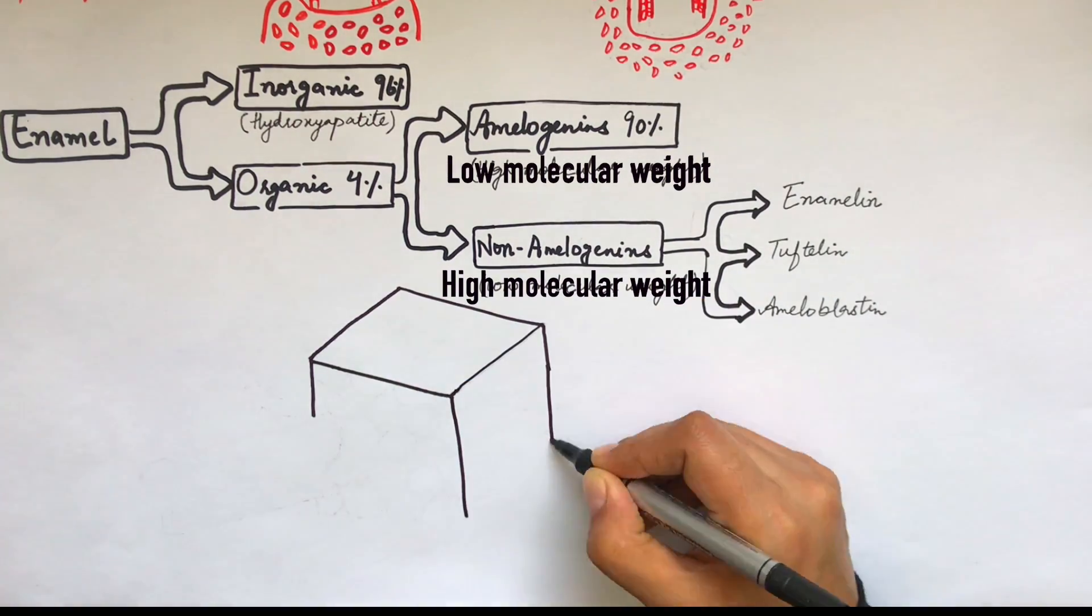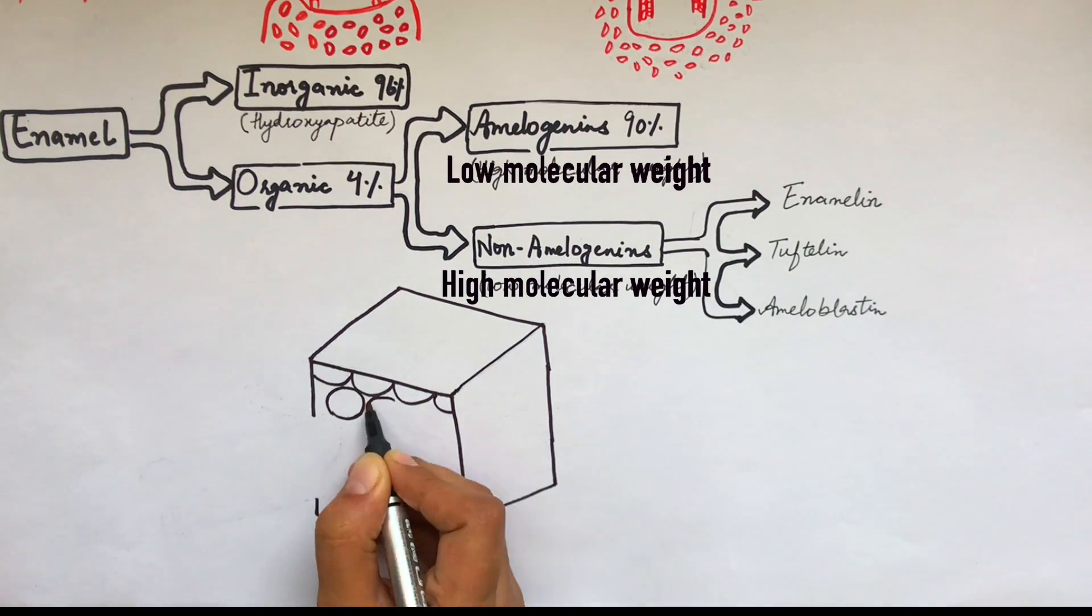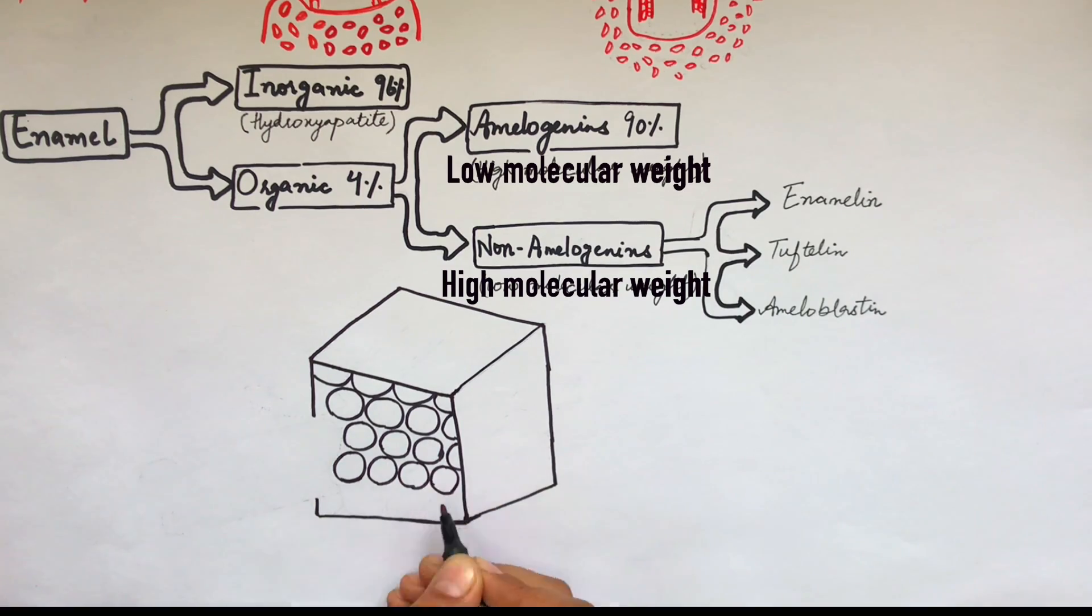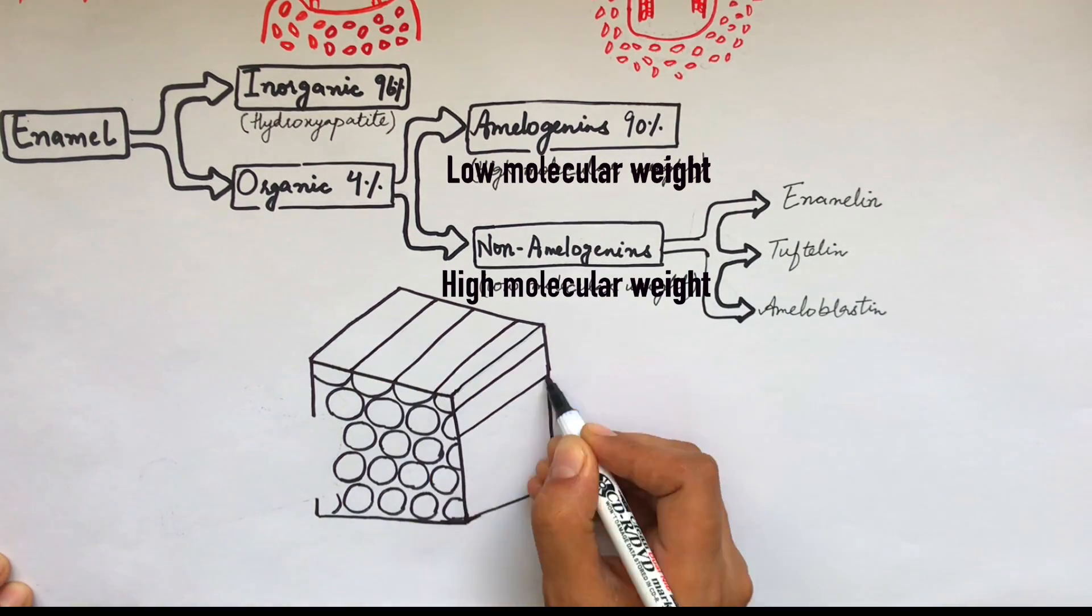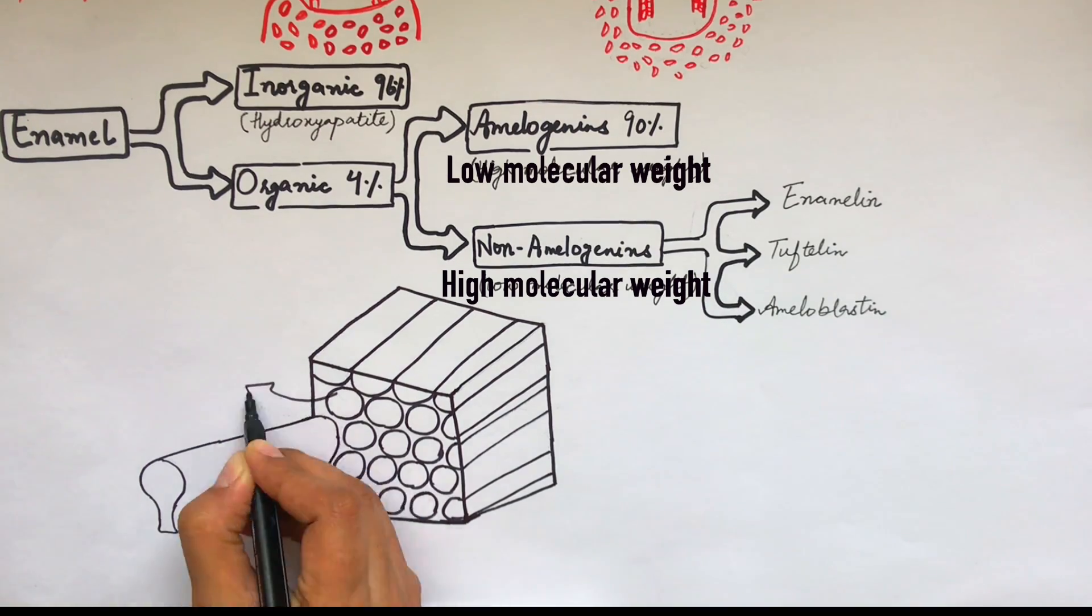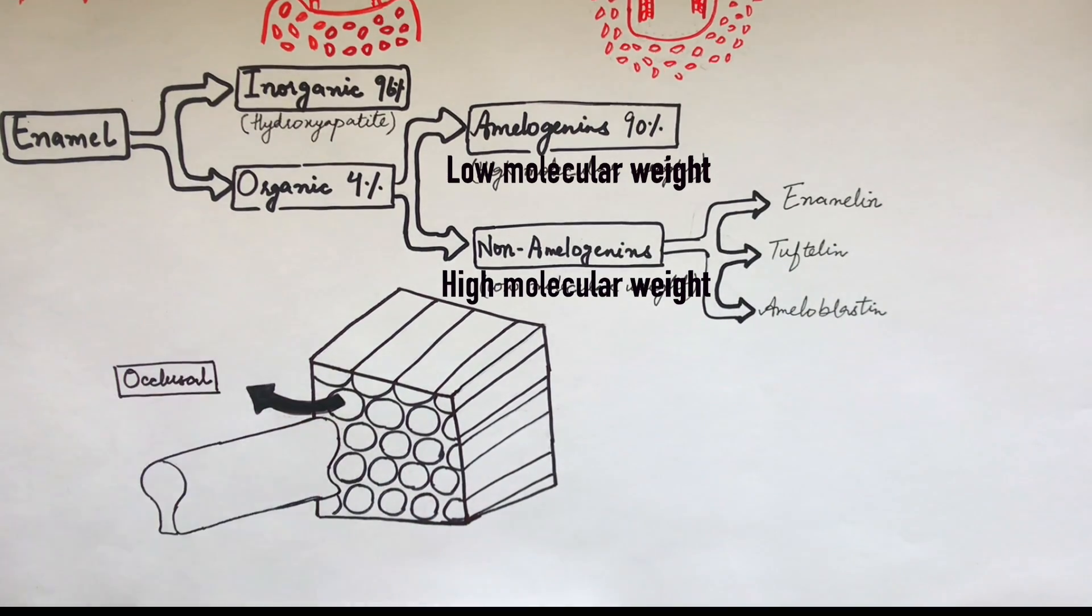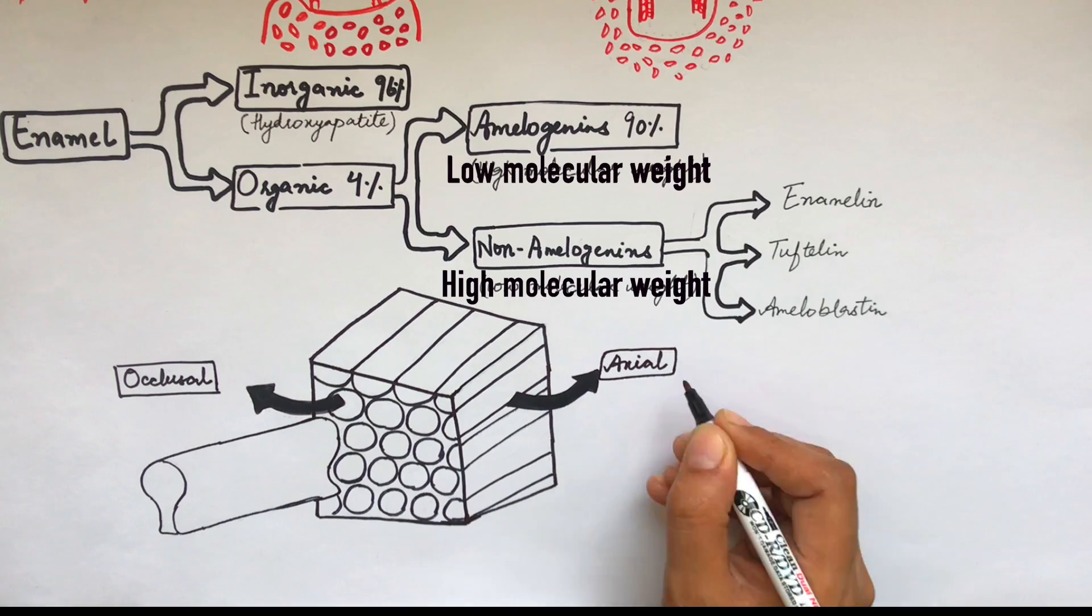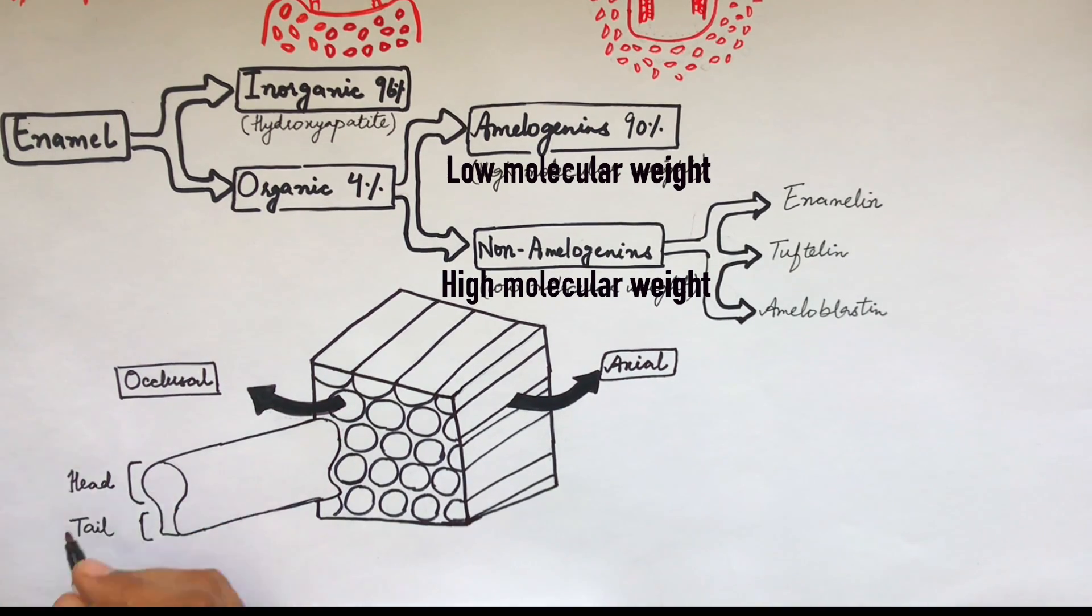Enamel has a very complex structure. Its structural unit is made up of two components, the rod and inter-rod enamel. The outline of these two components resembles the shape of a keyhole and can be seen from the occlusal or incisal cross-section of a tooth. Where the rod represents the head of the keyhole, the tail of the keyhole is represented by the inter-rod.